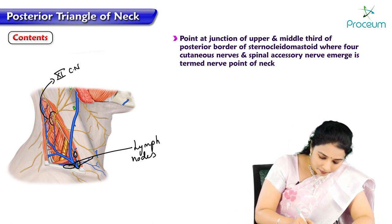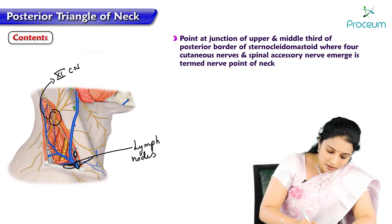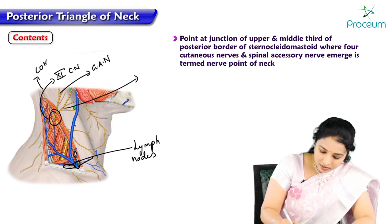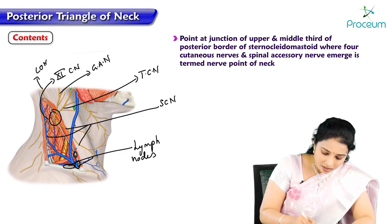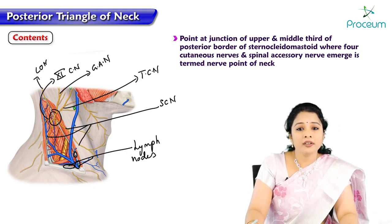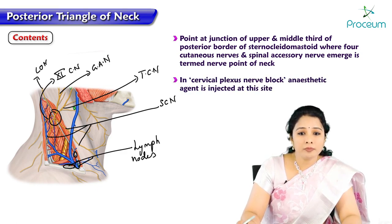At the nerve point of the neck we can see the lesser occipital nerve, greater auricular nerve, transverse cervical nerve, supraclavicular nerves, and the spinal accessory nerve all emerging at this point. In a cervical nerve block, the anesthetic agent is injected at this site.